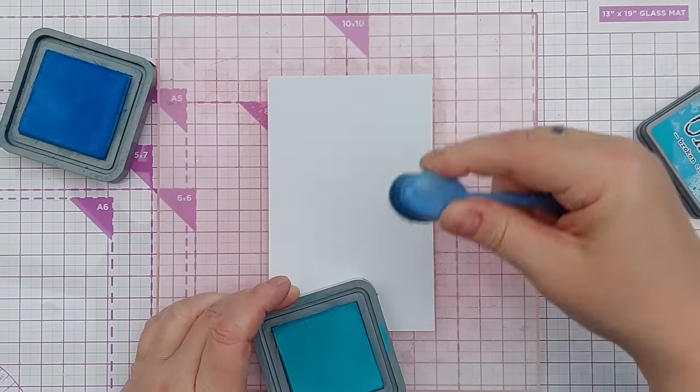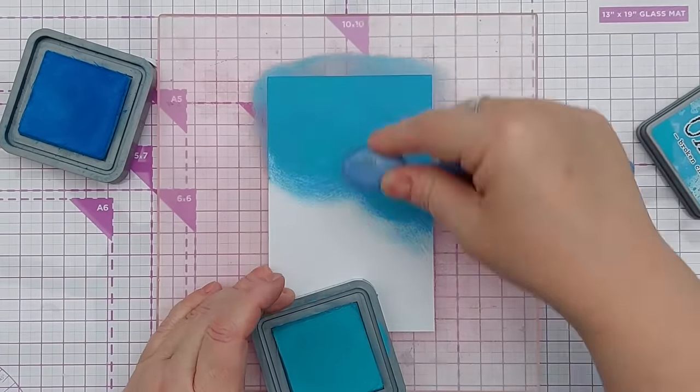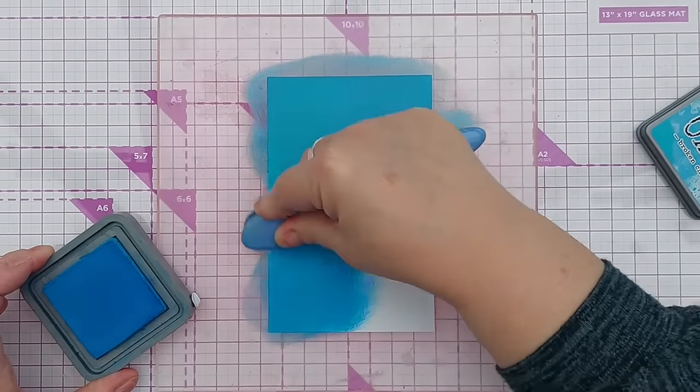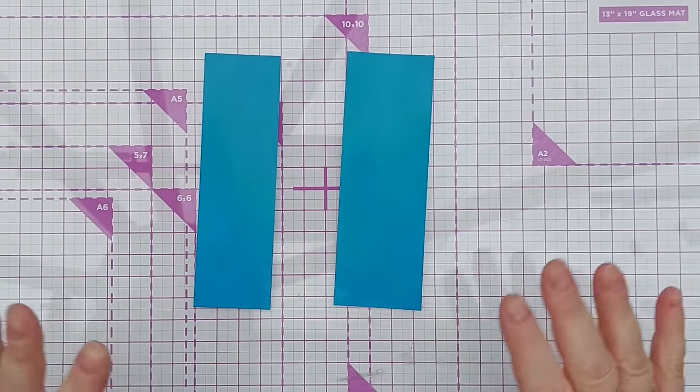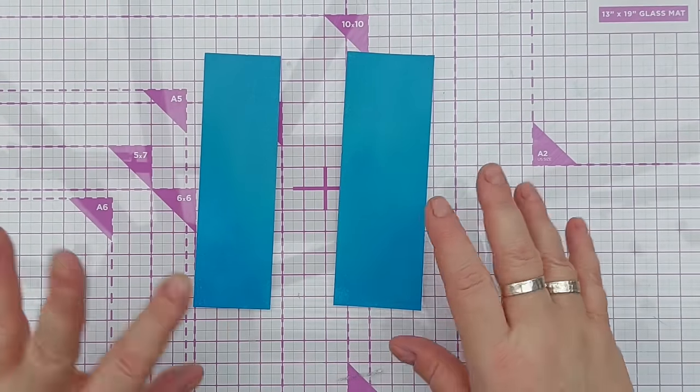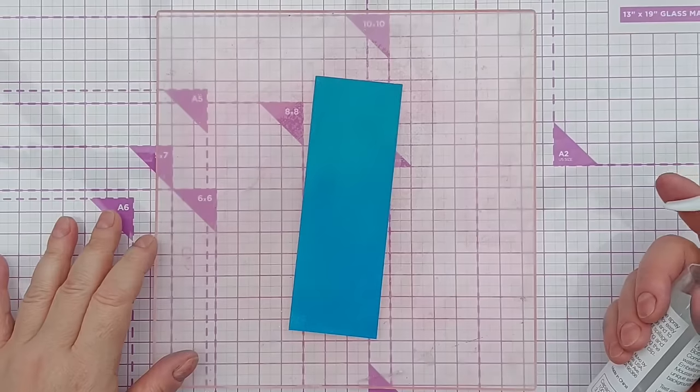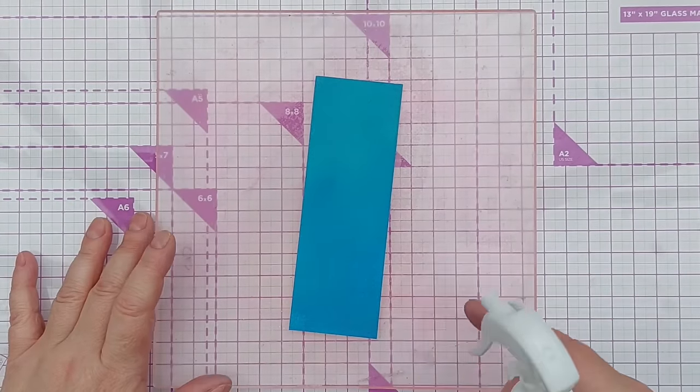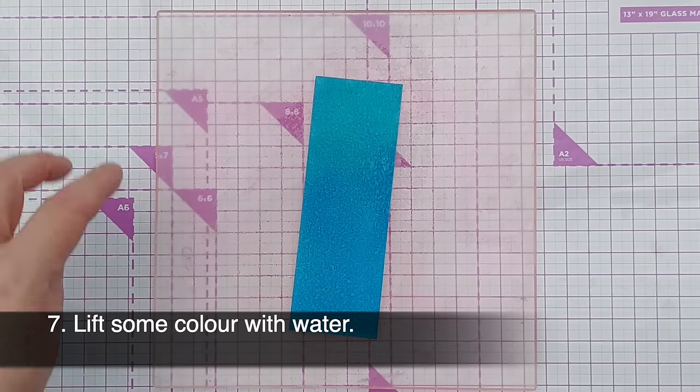I've got Broken China and Salty Ocean and I've chopped that in half, well roughly half so that we can do two different things. I've put one of the halves on my grip mat just to keep it still while we work on it.